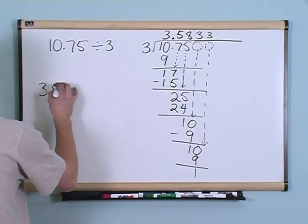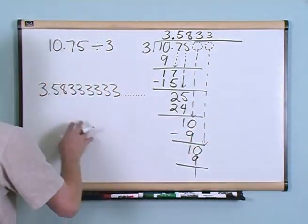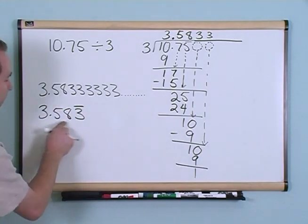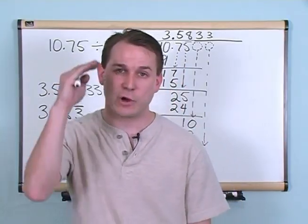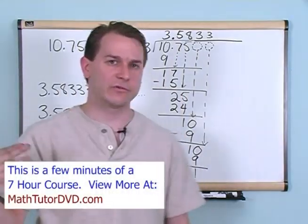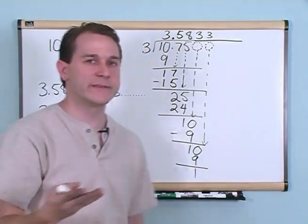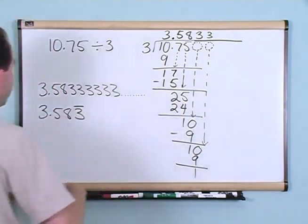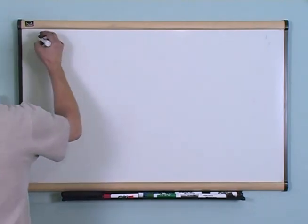So the answer to this problem is 3.5833333... — the 3s go on forever and ever. Another way to write that is 3.583 with a little bar over the 3, which tells you the 3 repeats forever; the 5 and 8 don't repeat, only the 3. When dividing decimals, you keep going until you get a remainder of 0 with no more digits to drop, or until you recognize a repeating loop. At that point you stop and note the repeating digit. You can verify this on a calculator: 10.75 divided by 3 gives 3s going on and on forever.